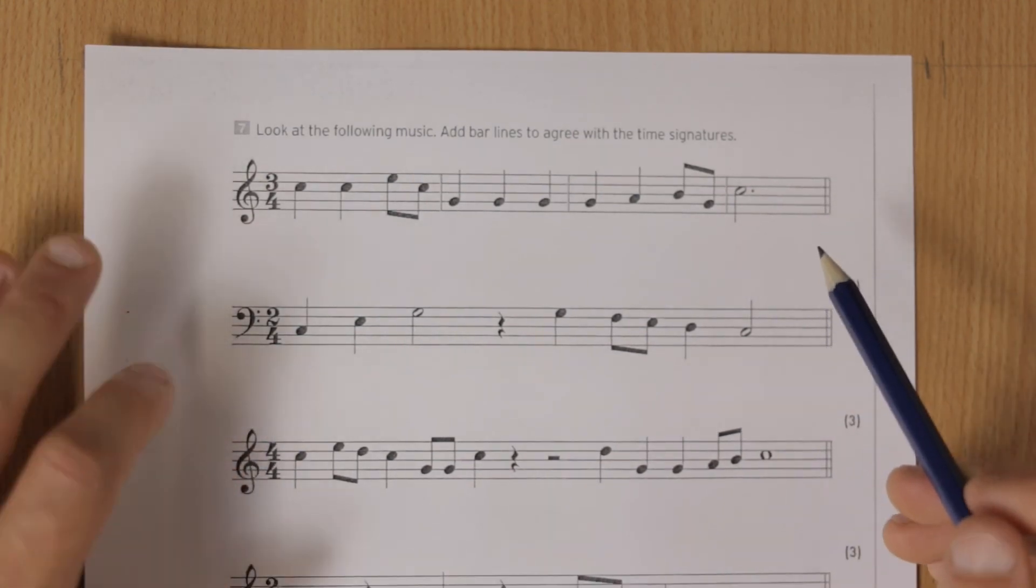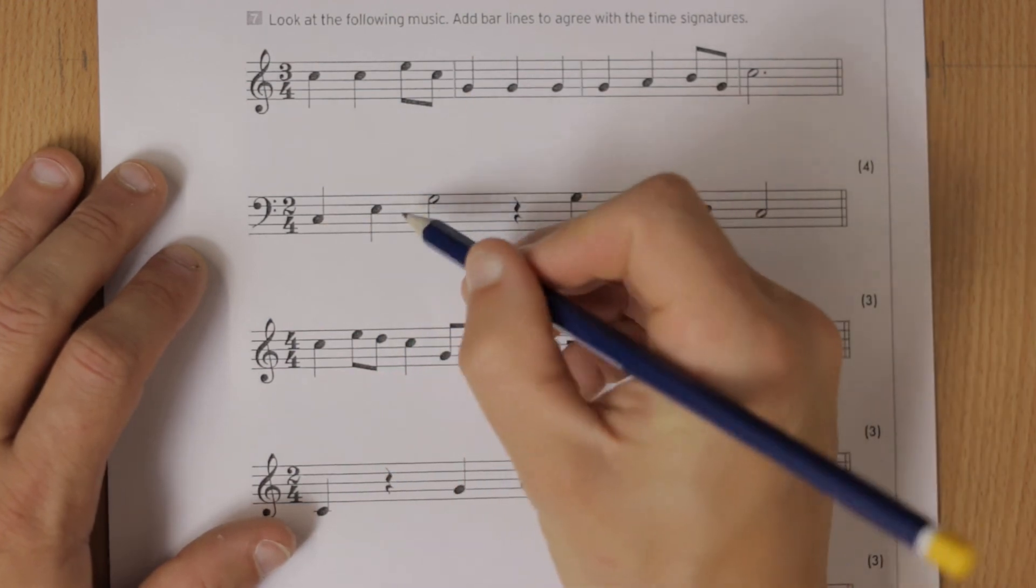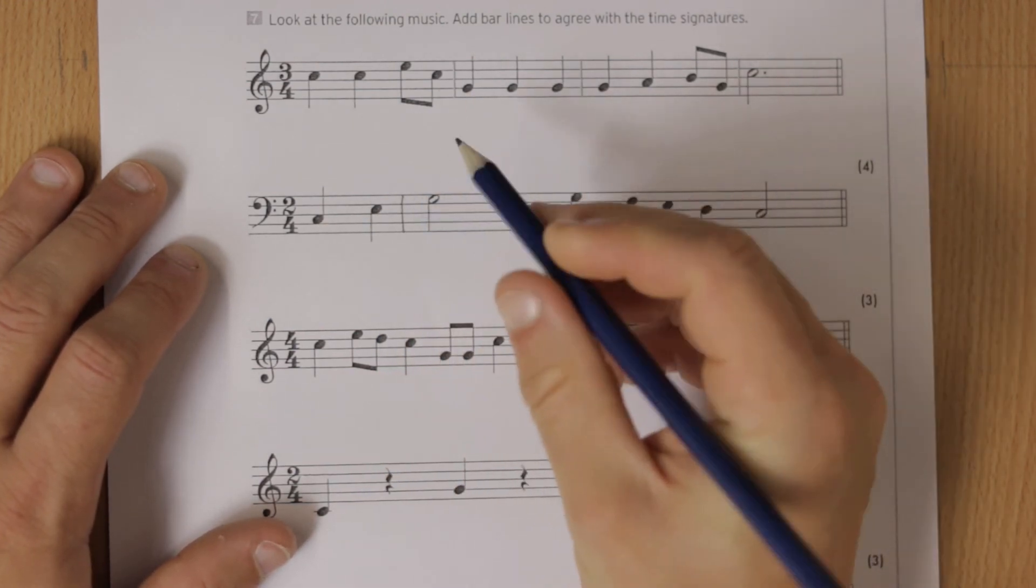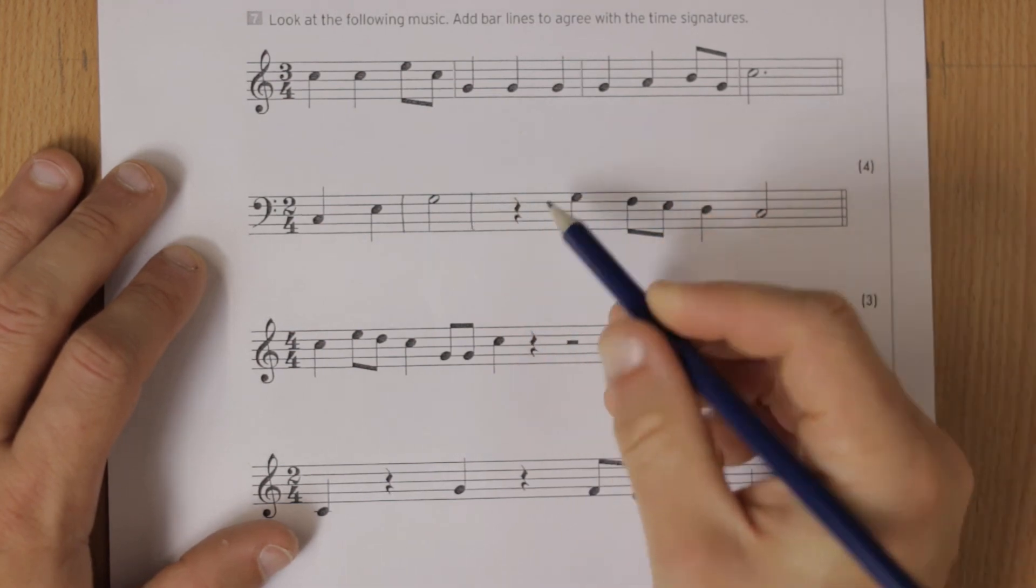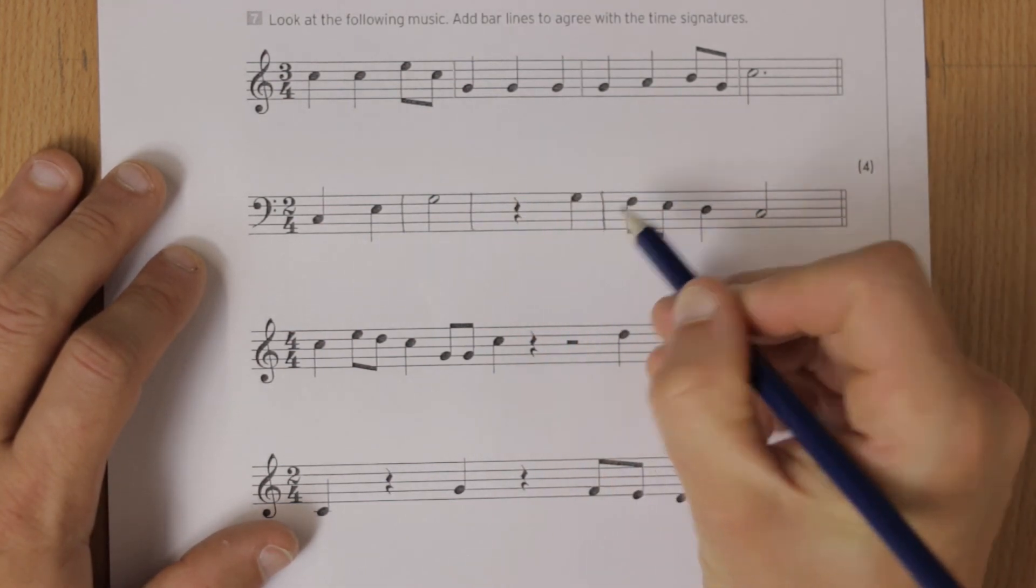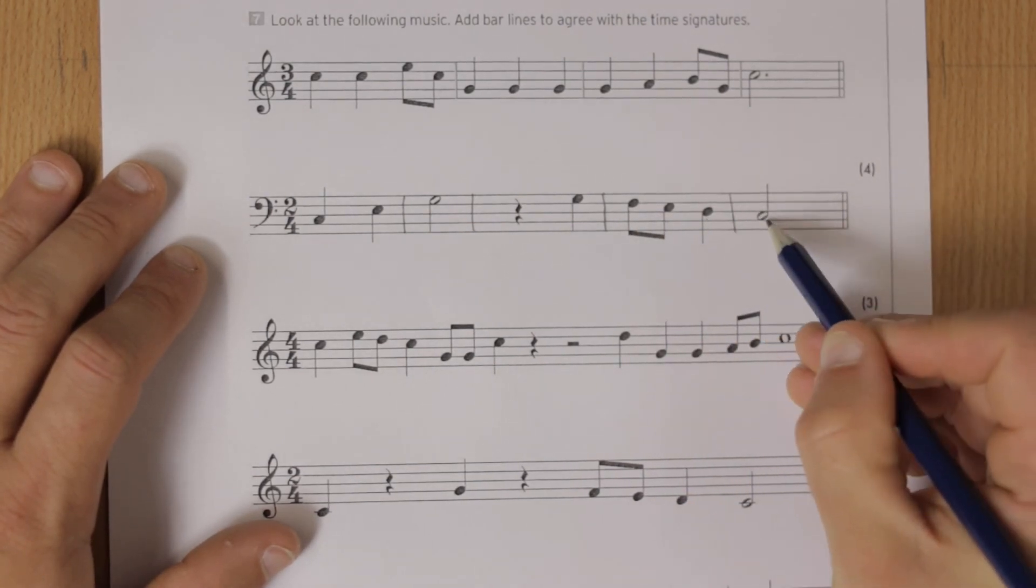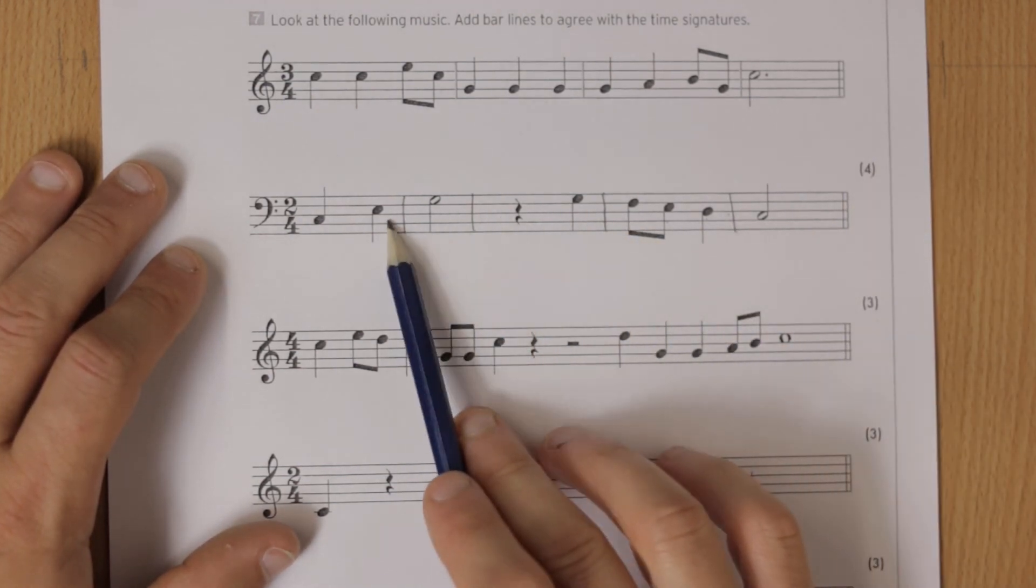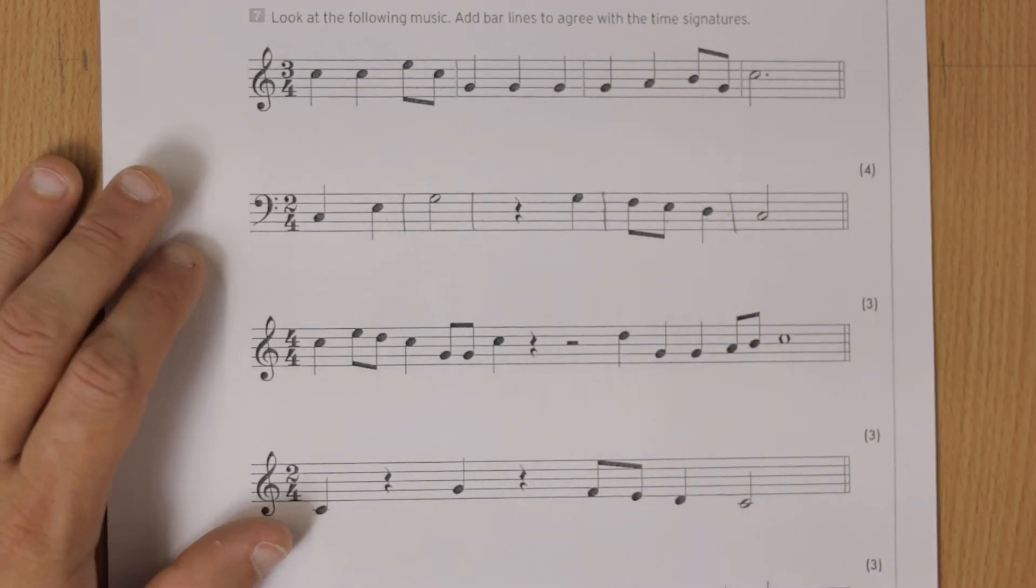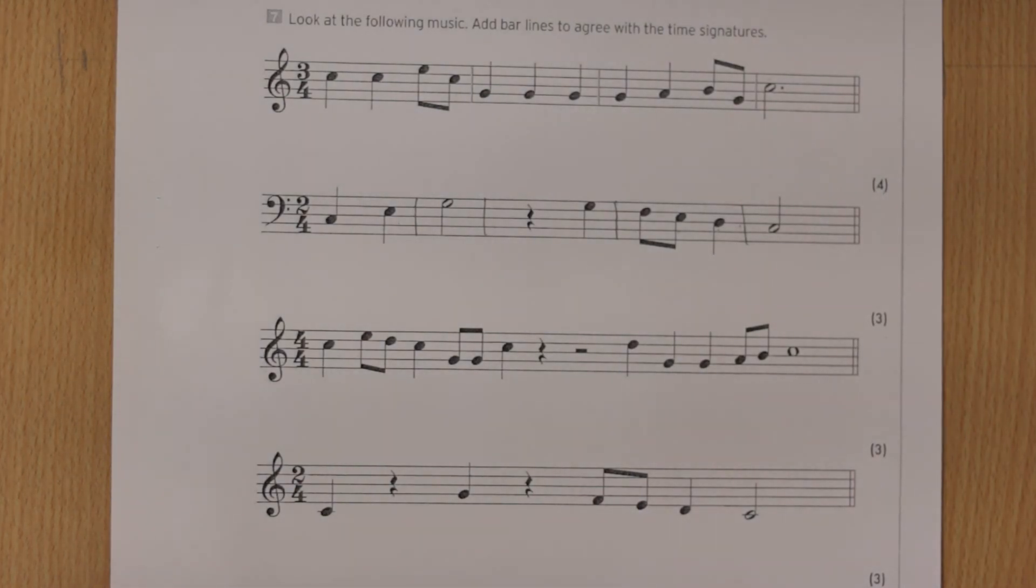I'll do one more for you: two-four, so one-two, bar line - use a ruler. One-two because that's a minim, bar line. One-two, bar line there. That's half and half is one-two, bar line, and then a minim is two, so that's it. Notice the number of points you get for each of these - there's one, two, three, four bar lines, so you can check against that when you've finished. That is MTT6 finished.